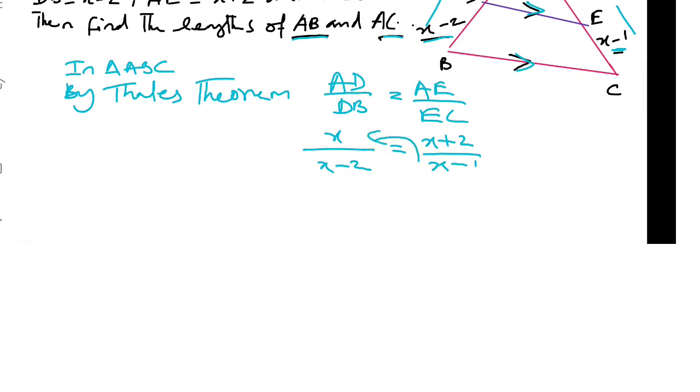Now cross multiplication: x into x minus 1 equal to x minus 2 into x plus 2. Here we use the identity a plus b into a minus b equal to a square minus b square.